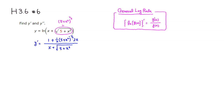We can clean up a little bit — there's a 2 on top and a 2 on the bottom that cancel. Also, I want to get rid of this negative 1/2 power since it creates a fraction inside a fraction, so I'm going to multiply by the quantity (5 plus x squared) to the positive 1/2 power to cancel it out. We have to do the same thing to the bottom.